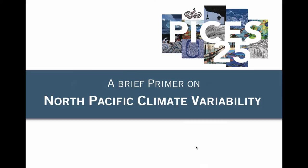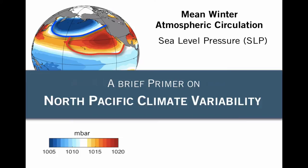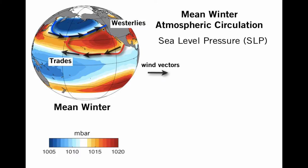I would like to provide a short primer on North Pacific climate variability. Our story begins by looking at the mean winter atmospheric circulation depicted here with the mean sea level pressure in the North Pacific, showing this system of low pressure and high pressure. If we draw the wind vectors, we recognize the familiar trajectory of the westerly winds at higher latitudes and of the trade winds.